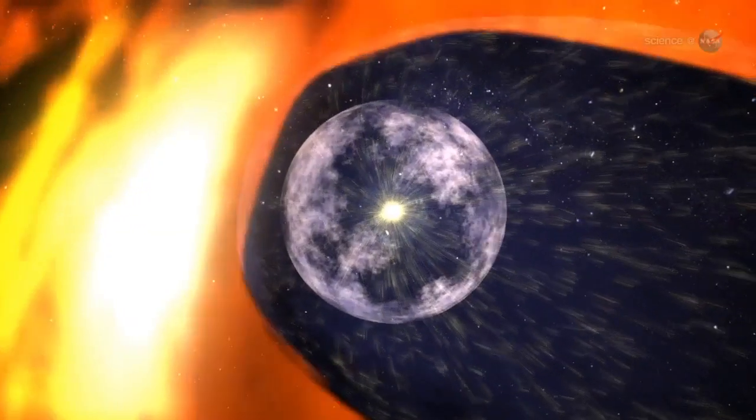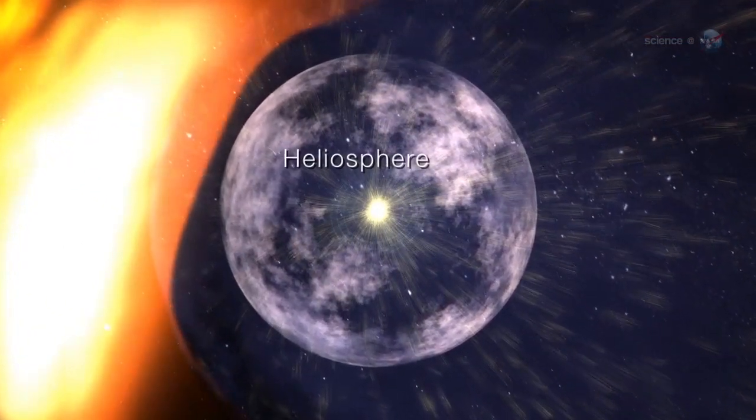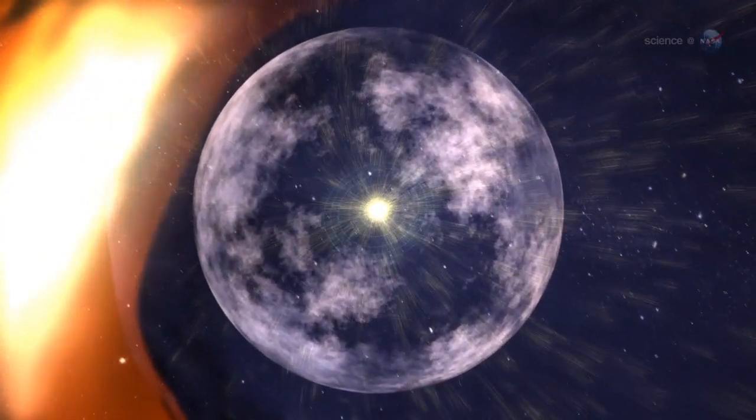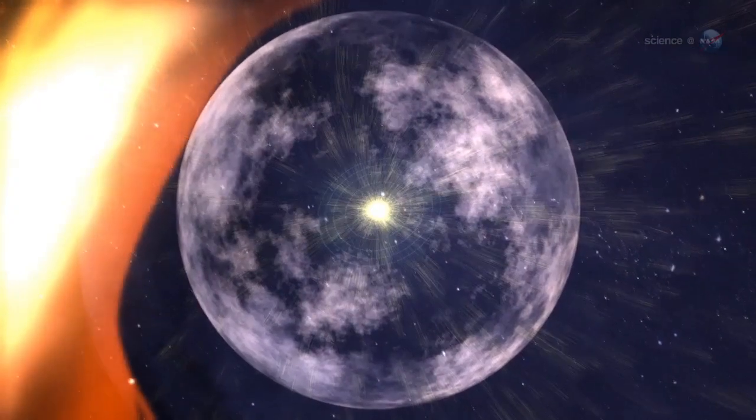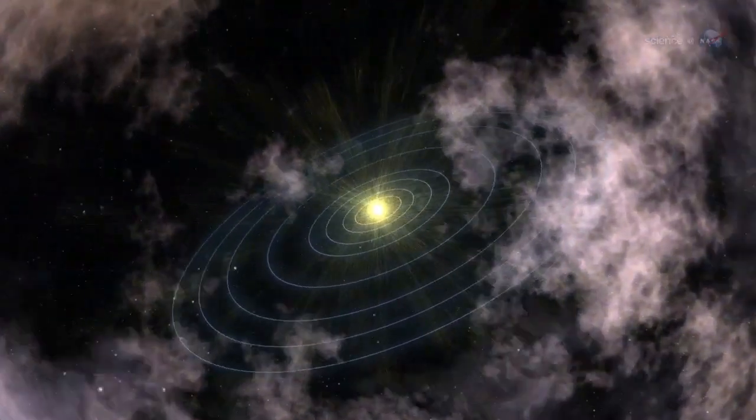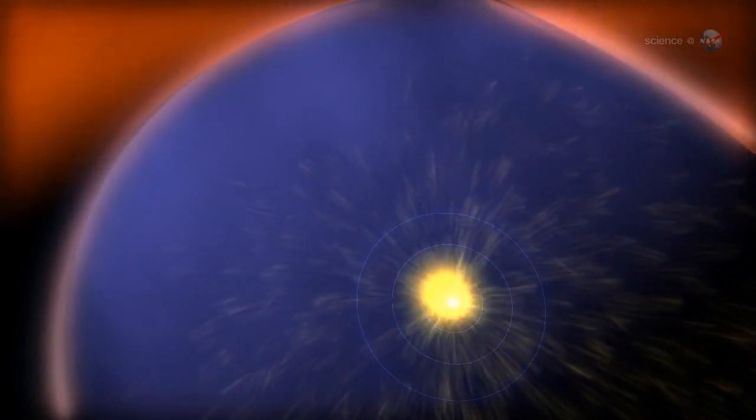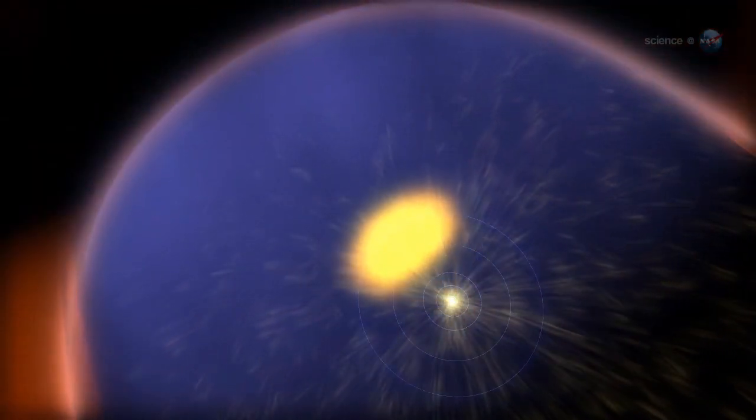Our solar system is surrounded by a magnetic bubble called the heliosphere that separates us from the rest of the Milky Way. Outside the heliosphere lies the realm of the stars, or interstellar space. Inside lies the Sun and all the planets.